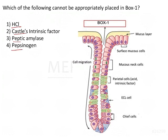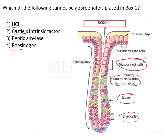There are certain cells in gastric glands: chief cells, ECL cells, parietal cells, mucus neck cells, surface mucus cells, and then you have the mucus layer.